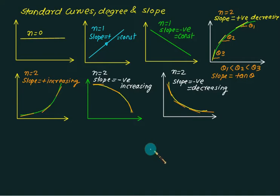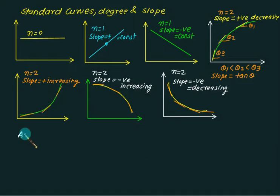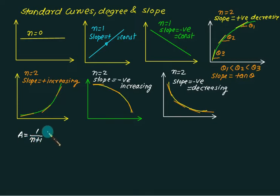Once we have an idea of all these figures which have a positive slope and negative slope, the next job is to calculate the area under the curve. To find out the area under the curve, we will make a generalized equation: A equals 1 upon n plus 1, where n is the degree, multiplied by b multiplied by h.